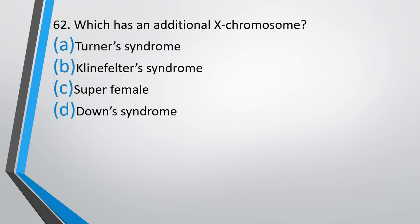Question No. 62: Which has an additional X chromosome? Turner's syndrome, Klinefelter's syndrome, super female or Down's syndrome. The correct answer is option B. In Klinefelter's syndrome there is an additional X chromosome, and the genetic formula becomes 44 plus XXY.